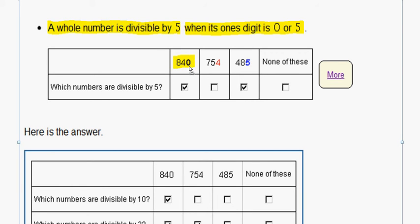We have 840, which ends in 0, so that is divisible by 5. 754 ends in 4, which is not 5 or 0, so it is not divisible by 5. 485 ends in 5, so it is divisible by 5. So, we can mark 840 and 485 as divisible by 5.